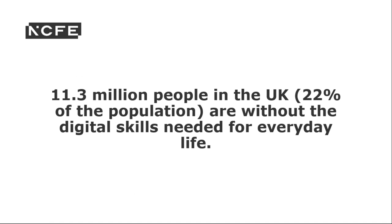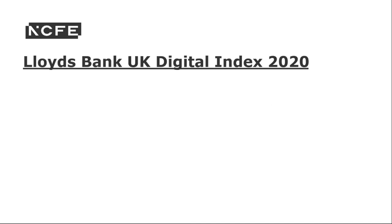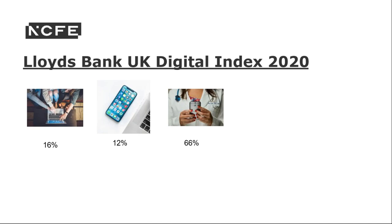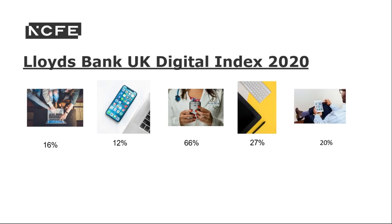Looking at the statistics on screen, with almost all interaction taking place online, we can understand the urgent need to reach out to the 22% of the adult population without digital skills needed for everyday life. An estimated 9 million people — 16% — are unable to use the internet or devices without assistance. 6.5 million, that's 12%, cannot open apps. Two-thirds — 66% — of those online have not used digital apps and tools to manage their health. And 27% of those in full-time education are concerned their digital skills aren't good enough.